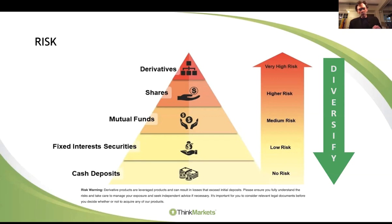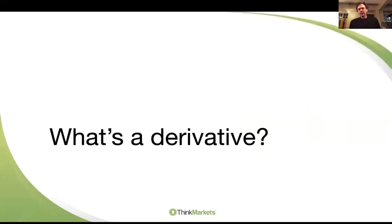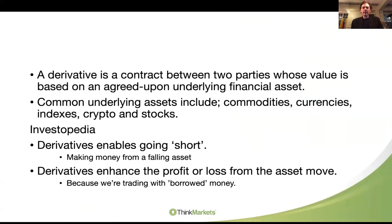When trading derivatives, I typically say to folks: structure your portfolio with a core of ETFs - between 50% to maybe as much as 80% or 90% ETFs - a little bit of equity on top, your preferred shares. And then right at the top of the triangle would be your derivative trading. So let's step back and say, what is a derivative? How do we define that?